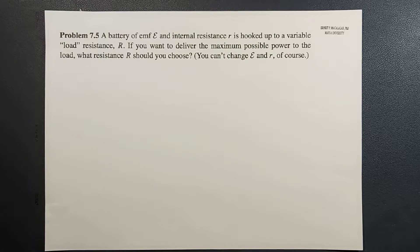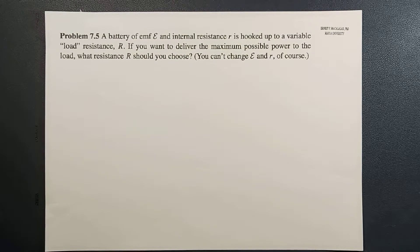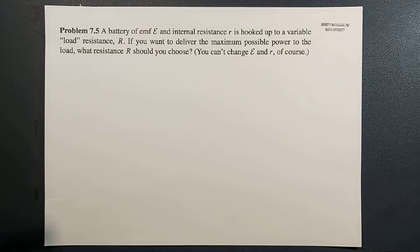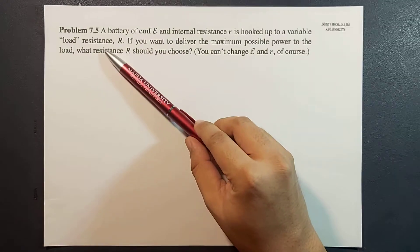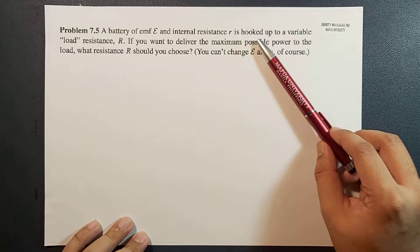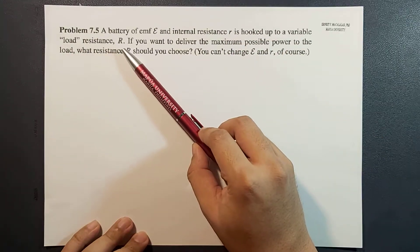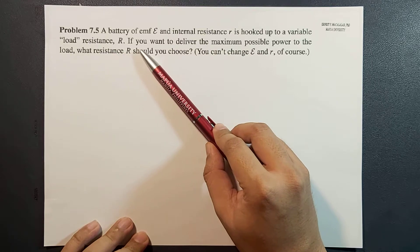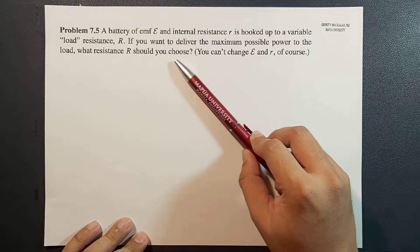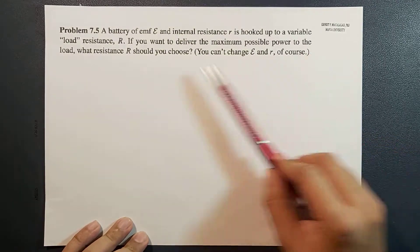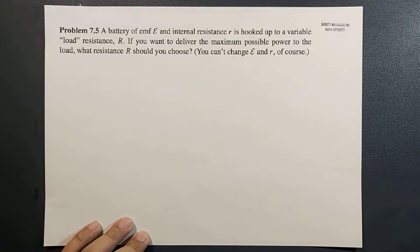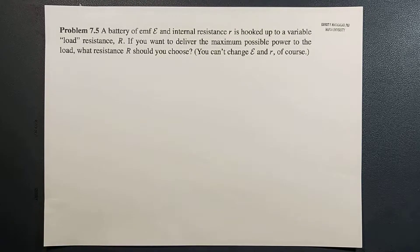What's up guys, it's me Sir Ernest, and today we're going to solve problem 7.5 of Griffith's fourth edition. The problem reads: a battery of EMF epsilon and internal resistance r is hooked up to a variable load resistance R. If you want to deliver the maximum possible power to the load, what resistance should you use? You can only change the value of that variable resistance R.